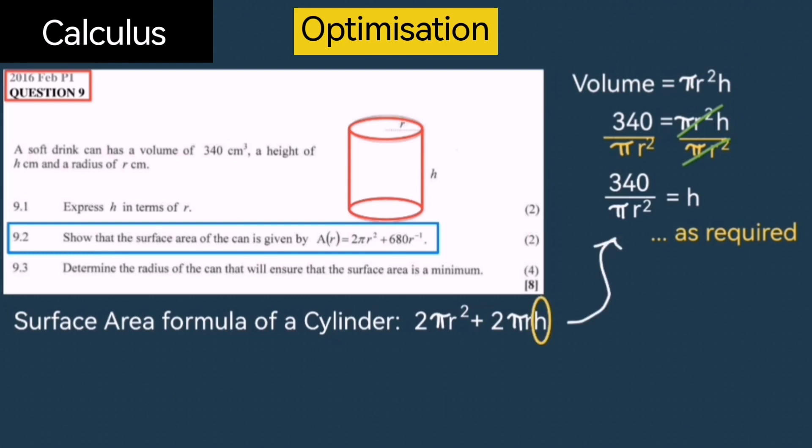Remember, we expressed the height in terms of R, so let's substitute that. We'll substitute H with 340 / (π r²). Notice how the π on top will cancel with the π at the bottom. Also notice that the radius R on top cancels with one of the radii at the bottom, so you'll still be left with one more at the bottom. Therefore, we have 2 times 340, which is 680 over R. Now 680 / R can be written as 680 × r⁻¹. That's what was required.